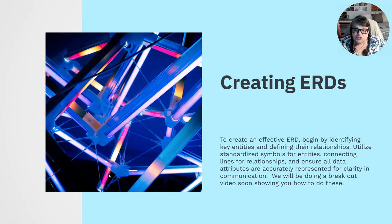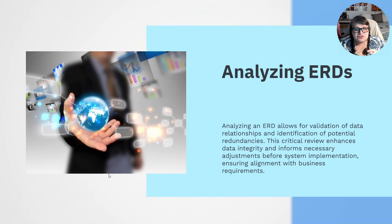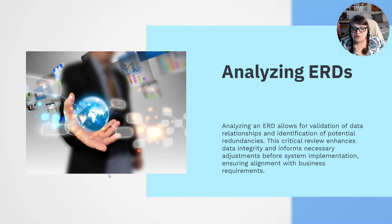Creating ERDs: to create an effective ERD, begin by identifying the key entities and defining their relationships. Utilize standard symbols for entities, connecting lines for relationships, and ensure all data attributes are accurately represented for clarity and communication. We're going to do a breakout on how to actually do this — I'm going to show you an example of an ERD on something simple, possibly a medical system. Analyzing an ERD allows for the validation of data relationships and the identification of potential redundancies — redundancies are not good because then you're tallying things incorrectly. This critical review enhances data integrity and informs necessary adjustments for system implementation, ensuring alignment with business requirements.